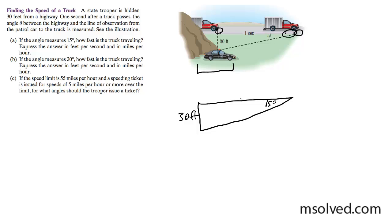So we want to figure out, we need to find this component here which is called x. So I'm going to do the tangent of 15 degrees is equal to 30 over x. So then x is equal to 30 divided by tangent of 15 degrees, which is equal to 111.96 feet a second.